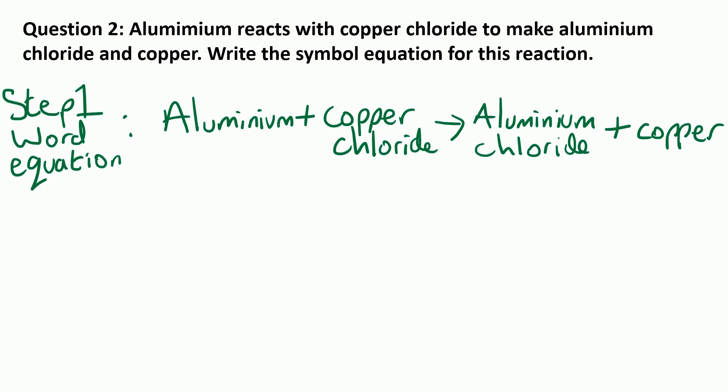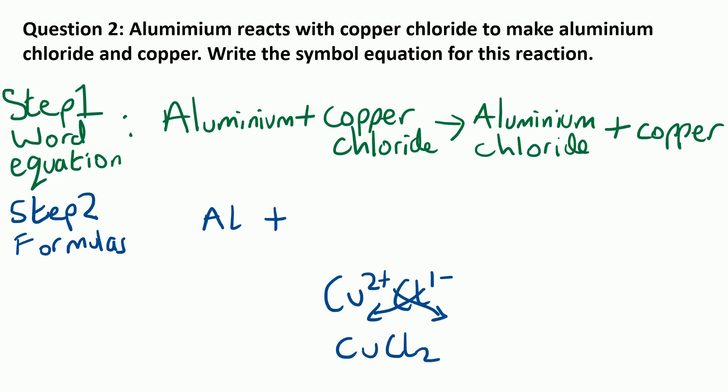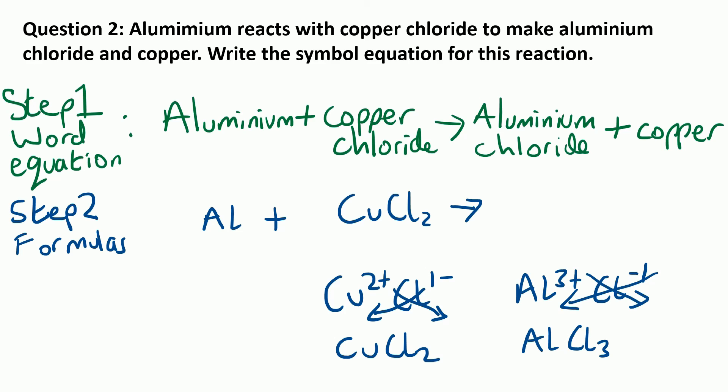Step two is to write the formulas. Aluminium is Al. For copper chloride, using the crossover method: Cu is a 2+ because it's in that middle section, Cl⁻ is a 1− as it's in group 7. Cross the numbers over and we get CuCl₂, so that formula goes under copper chloride. Now aluminium chloride: aluminium is a 3+ because it's in group 3, chloride is a 1−. When we swap the numbers over we get AlCl₃. Copper on its own is Cu. That blue section would get you the first mark in an exam.